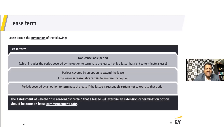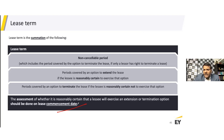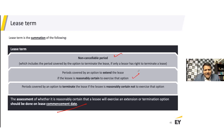The assessment of whether it is reasonably certain that a lessee will exercise an extension or termination option should be done at the lease commencement date, not at inception. At inception, you evaluate whether the contract contains a lease; at commencement, you determine the lease term when recording the right-of-use asset and liability. Non-cancellable period plus renewal options where you are reasonably certain to exercise — both feed into the lease term. This assessment should not be based solely on the lessee's intention but should focus on economic incentives including contract-based, asset-based, or market-based factors.